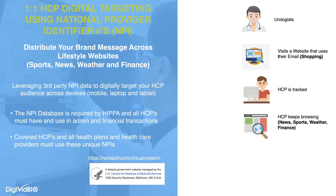As they browse online — think of normal media consumption: news, sports, weather, finance — we can show your ads specifically to that audience one-to-one, based on that unique NPI number.